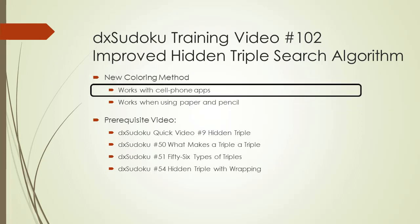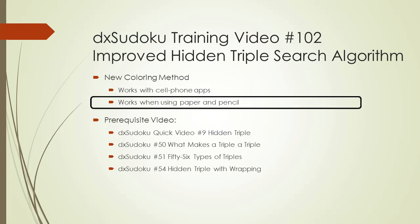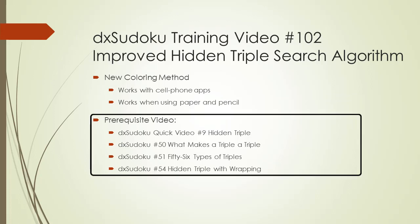This new way will allow you to search for hidden triples on cell phone apps that do not support candidate-level coloring. Also, this new way can be used for finding hidden triples if you are solving puzzles using paper and pencil. Here is a list of prerequisite videos for this video.